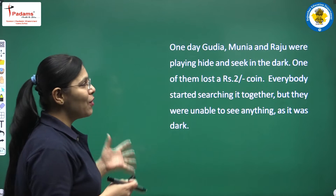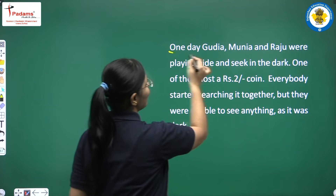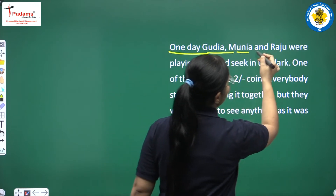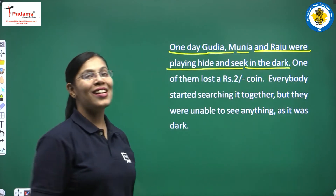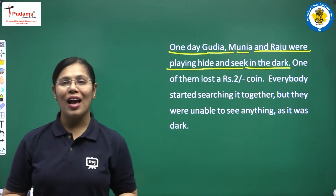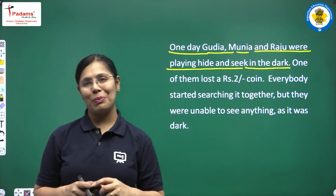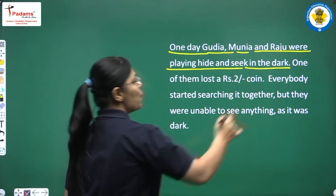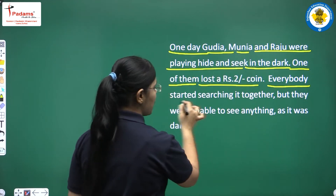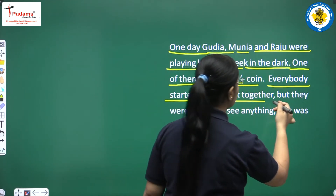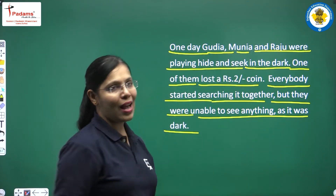Now we will talk about a story of Guriya, Muniya and Raju. One day, Guriya, Muniya and Raju were playing hide and seek in the dark. One of them lost a one-rupee coin. Everybody started searching for it together but they were unable to see anything as it was dark.